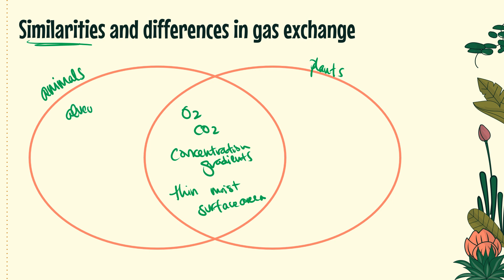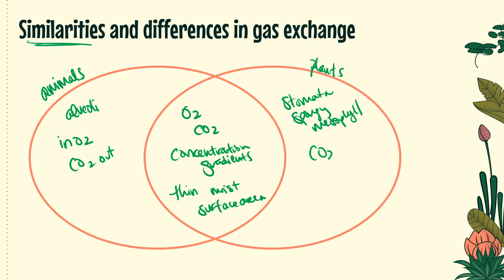Differences: animals have alveoli in their lungs, whereas plants have stomata and spongy mesophyll. Animals mostly pull oxygen in and push CO2 out; plants, especially during daylight when lots of CO2 is needed for photosynthesis, take in more CO2 and release more O2. Plants can pause gas exchange by closing their stomata with guard cells when they need to prevent water loss. Animals don't have this option — gas exchange in animals is continuous with no pausing possible.